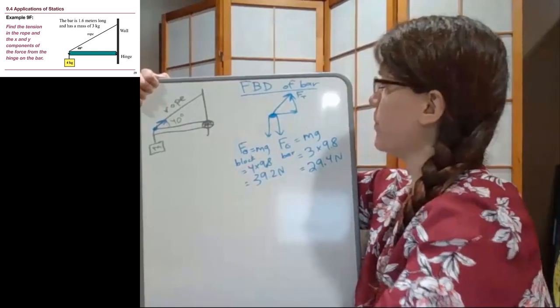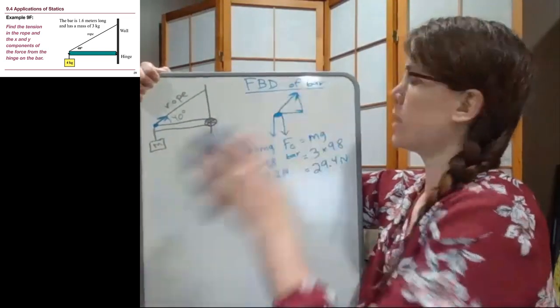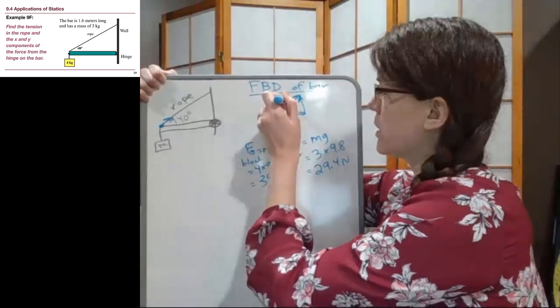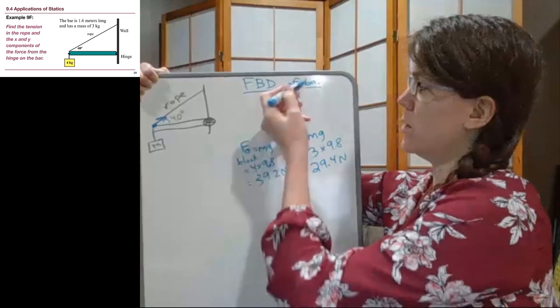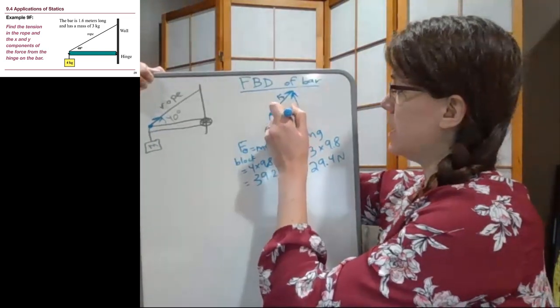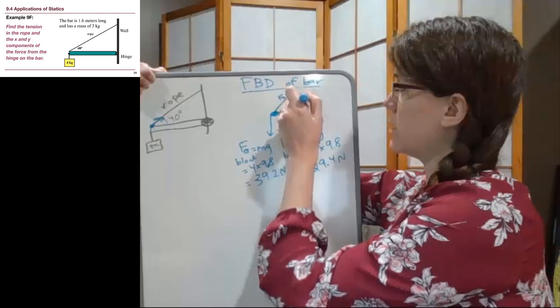So to maybe make that a little bit clearer for ourselves, I'll call this tension along the hypotenuse here, and then we'll have Tx and Ty.